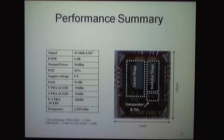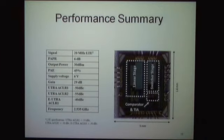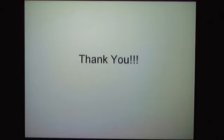This slide summarizes the performance of the Envelope Amplifier. It was fabricated in a 150 nm CMOS process, consisting of the linear stage and switching amplifier, with a die area of 1.6 mm². For 20 MHz LTE with 30 dBm output power, the measured PAE is 45% while meeting linearity requirements. These measurements were performed for Band 7 LTE, which is quite challenging for achieving good PAE. That concludes my presentation — I'm happy to take questions.